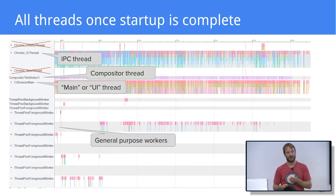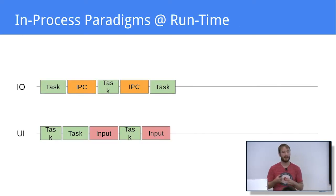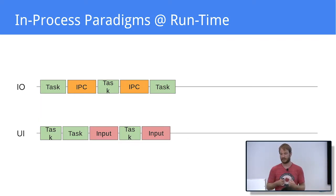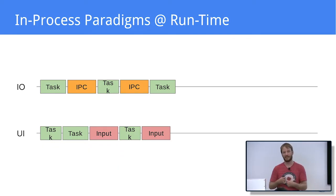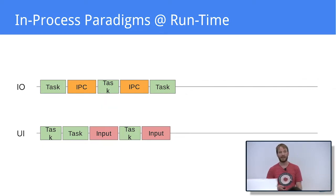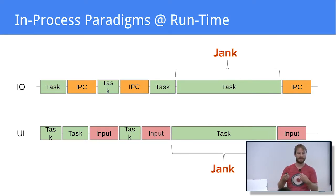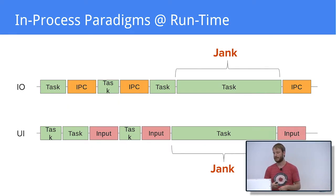There are still a few legacy threads being migrated to the thread pool. The IO thread runs an infinite loop alternating between taking a task from its task queue and reading IPCs from message pipes. Similarly, the UI thread alternates between getting a task from its task queue and getting messages from the operating system, such as input events. What happens if a long task — say, a 100 millisecond task — runs on one of these threads? We get what we call jank, because either the IO thread will not be able to receive IPCs or the UI thread will not be able to receive new input events, and the user will find Chrome unresponsive. So we never want any slow task on the IO or UI thread.